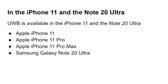Ultra wideband technology has been around for a number of years, but it's come to the forefront because it's been adopted in popular smartphones. First was the iPhone 11 with the U1 chip, an ultra wideband chip, and now it's also in the Note20 Ultra, meaning it's taking footing in both the Apple and Android ecosystems. Now is a good time to understand what ultra wideband does and what it will mean for us.